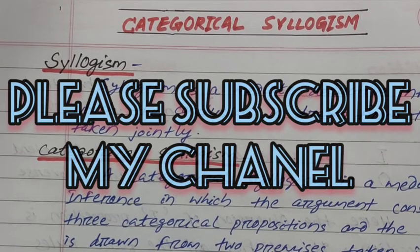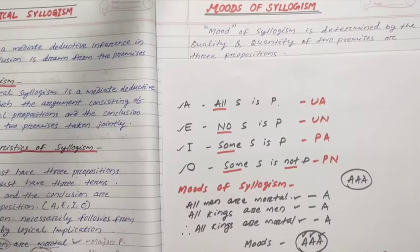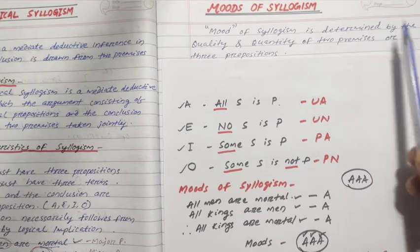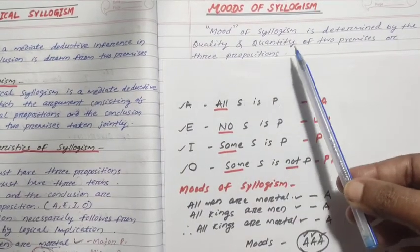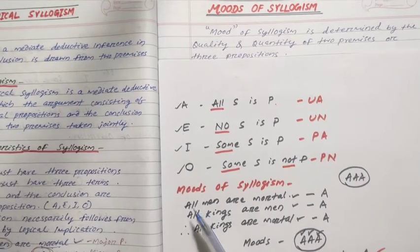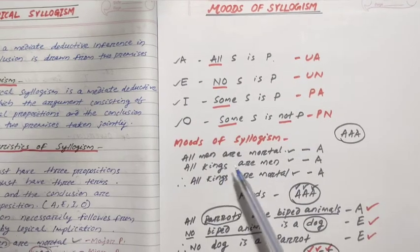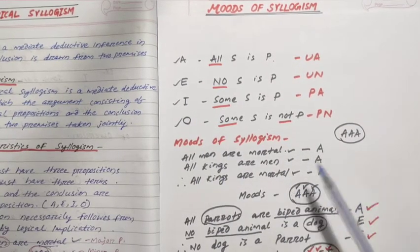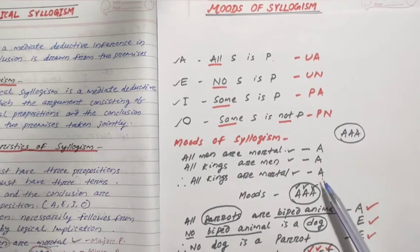If you have any doubt or question, please ask in the comments. Let's start the topic. Modes of syllogism are determined by the quality and quantity of the two premises and the conclusion. Here I have taken an example: 'All men are mortal, all kings are men, therefore all kings are mortal.' The mode here is AAA — first proposition A, second A, third A.